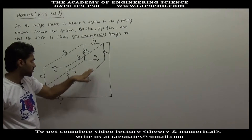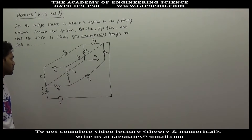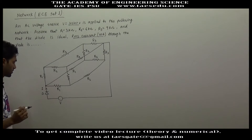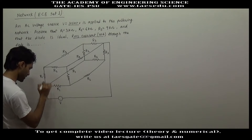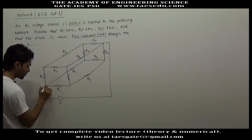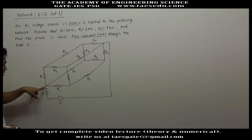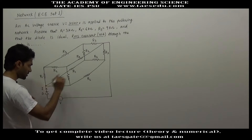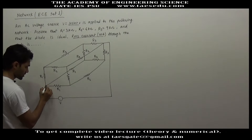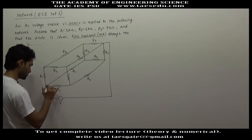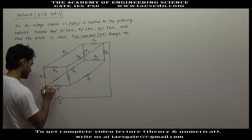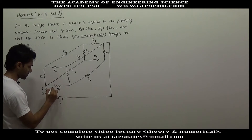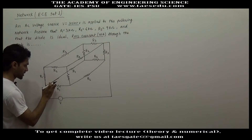If you closely observe this resistive network, this network is symmetrical about this point. Let us say current here is I. If you observe this resistive network from this point, there are three branches coming from this point — this is the first branch, this is the second branch, and this is the third branch.